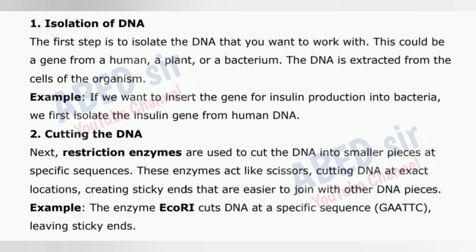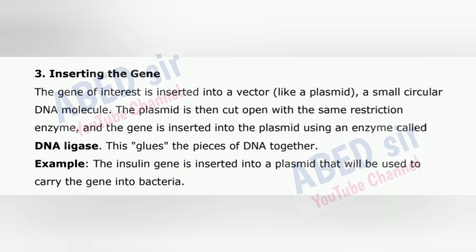2. Cutting the DNA – restriction enzymes are used to cut the DNA into smaller pieces at specific sequences. These enzymes act like scissors, cutting DNA at exact locations, creating sticky ends that are easier to join with other DNA pieces. For example, the enzyme EcoRI cuts DNA at a specific sequence, leaving sticky ends. 3. Inserting the gene – the gene of interest is inserted into a vector, like a plasmid, a small circular DNA molecule. The plasmid is then cut open with the same restriction enzyme, and the gene is inserted into the plasmid using DNA ligase. This glues the pieces of DNA together. For example, the insulin gene is inserted into a plasmid that will be used to carry the gene into bacteria.